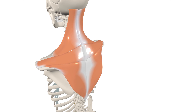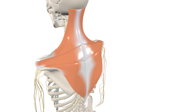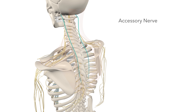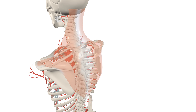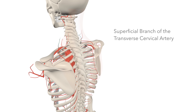The trapezius is innervated by the accessory nerve for its motor supply, and branches of the third and fourth cervical nerves for its proprioception supply. Arterial blood is provided to the trapezius by the superficial branch of the transverse cervical artery, or the superficial cervical artery.